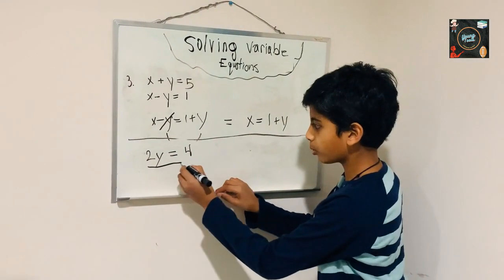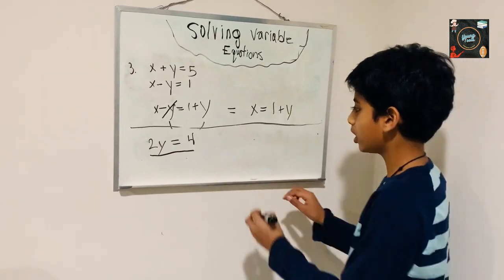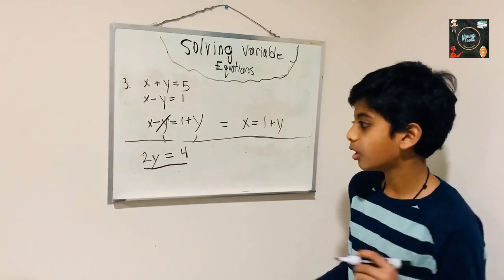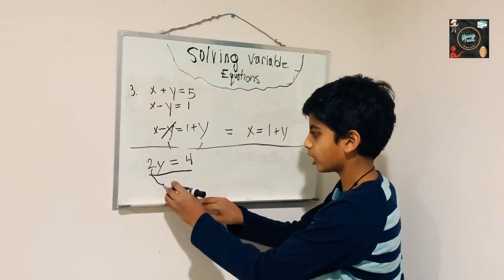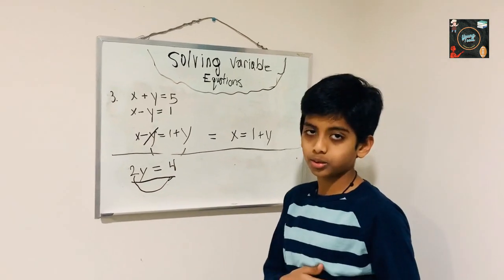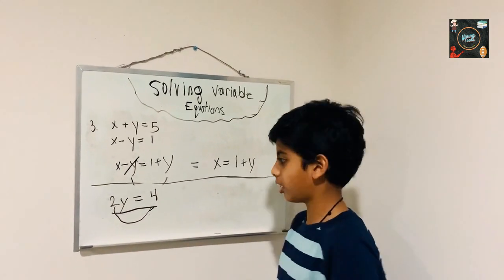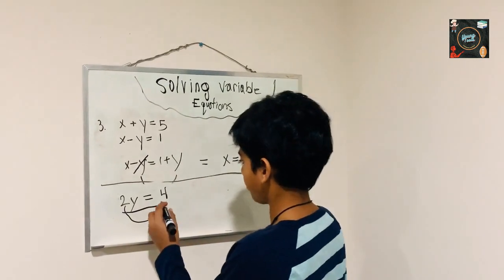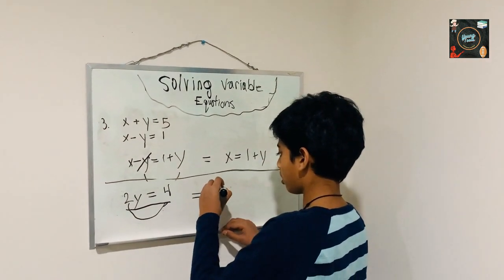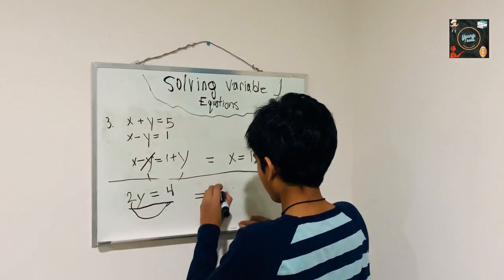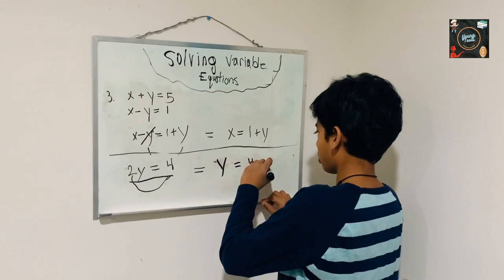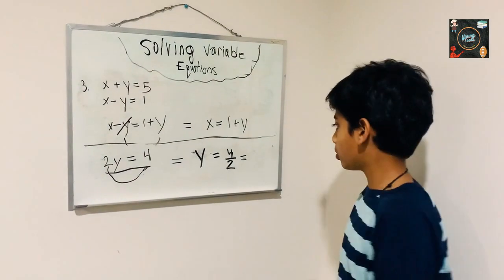Since 2y is equal to 2 times y, we have to switch the 2 to the other side. When we switch it we change it to the opposite operation — division. So we have y equals 4 divided by 2, which equals 2. So y is equal to 2.